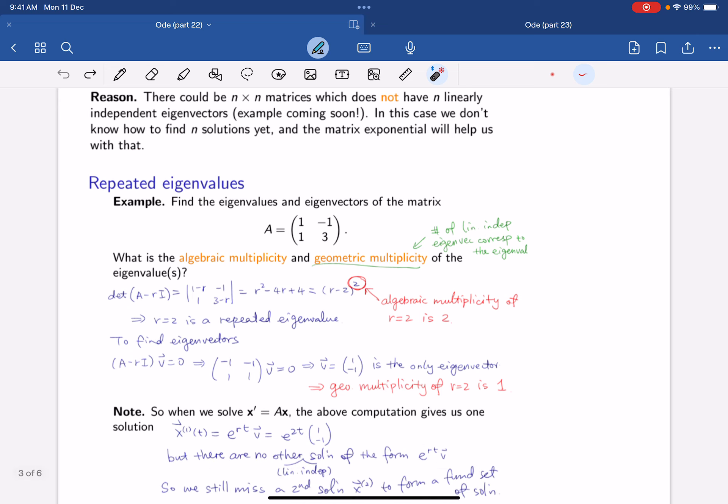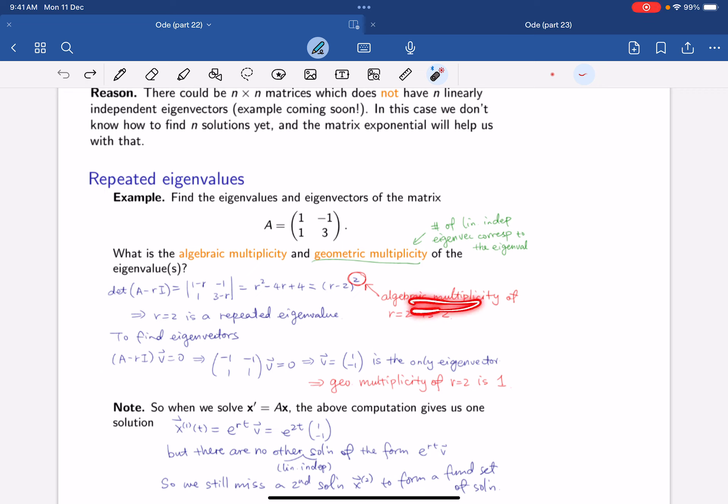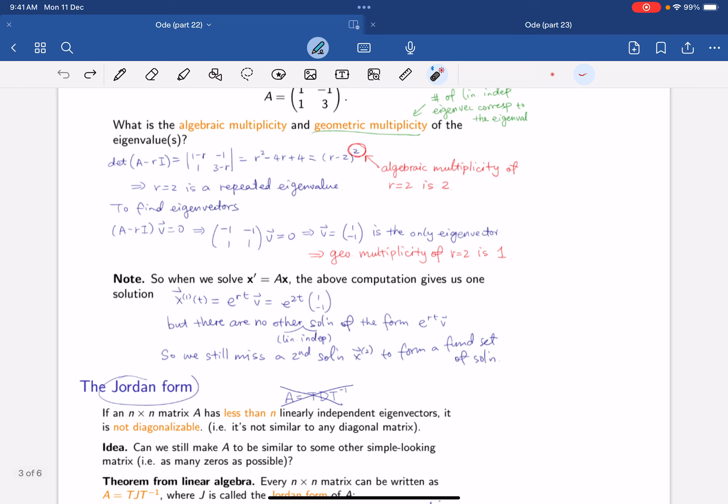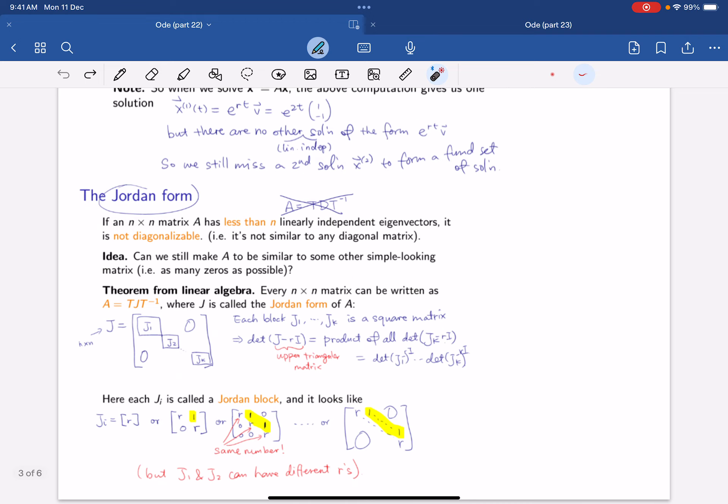So it means that we first introduce the idea of algebraic multiplicity and geometric multiplicity. When you find the determinant of this matrix, you get that r minus 2 holding it squared. The algebraic multiplicity is just taking this factor and whatever power it is. And when you find the eigenvalues, there's only 1. So that will tell us that the geometric multiplicity is the number of linearly independent eigenvectors corresponding to the eigenvalue. We see that we cannot use the normal way, because we only get one solution set. But there will be no way to form another solution.